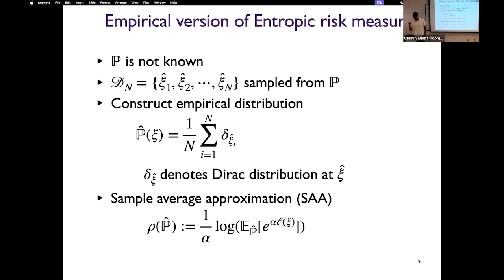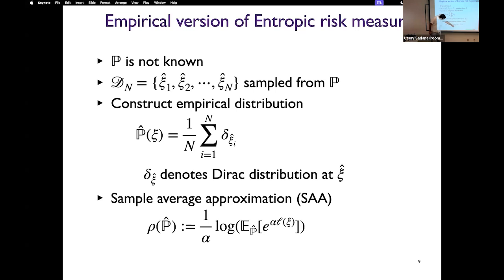Until now, I assumed that the distribution p was known to us. However, in the real world, p is not known. What we have is a dataset of samples psi-1-hat, psi-2-hat, ..., psi-n-hat, which are sampled from p. Based on this data, we can construct an empirical distribution which puts a mass of 1/n at each of the scenarios. What we can obtain is the sample average approximation, where I have replaced p with p-hat.